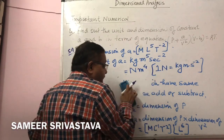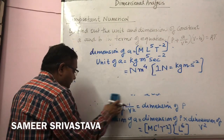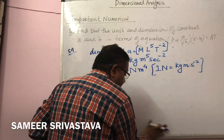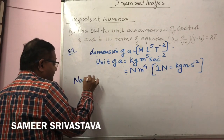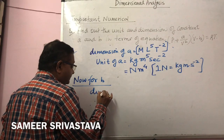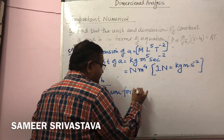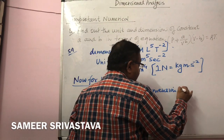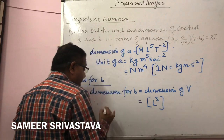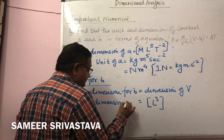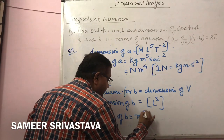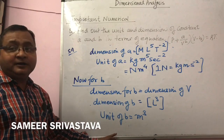Now for the dimension and unit of B: since V and B are subtracted, they have the same dimension. So dimension of B equals dimension of volume, which is L³. The unit of B is meter³.